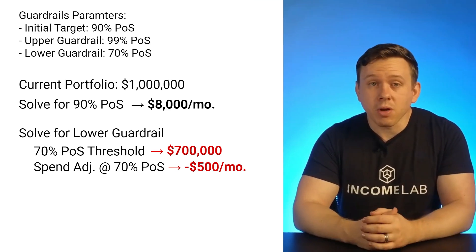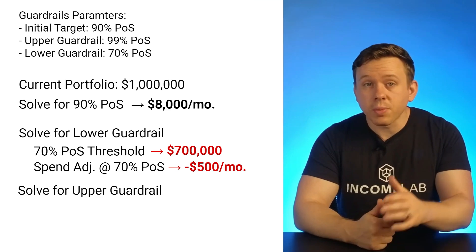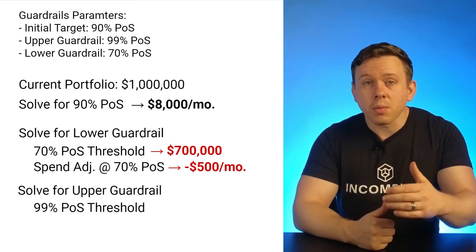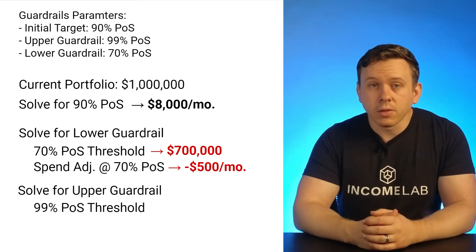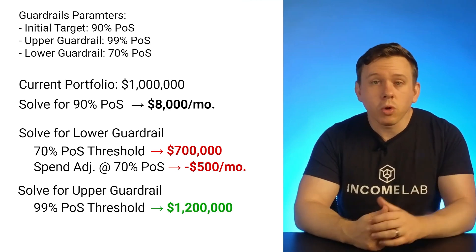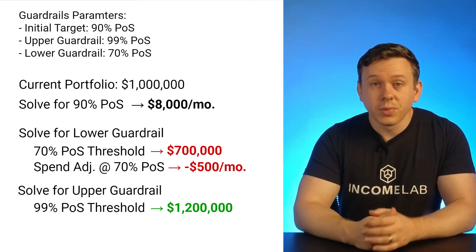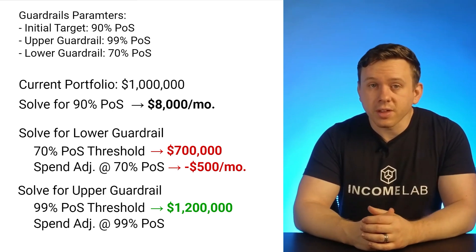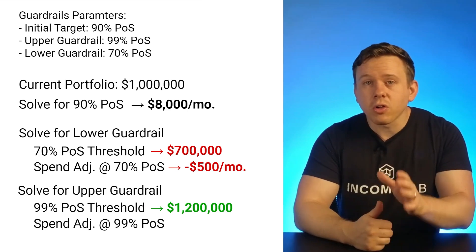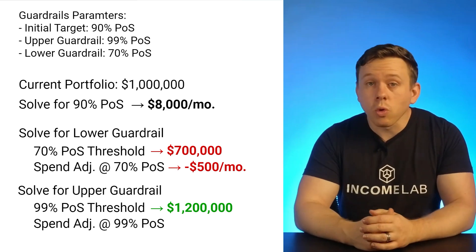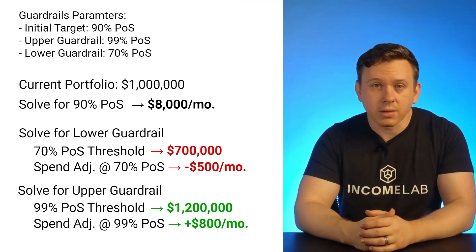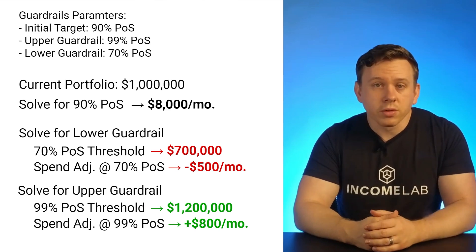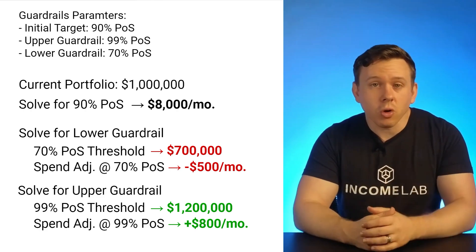So now we're ready to repeat that same process for the upper guardrail. We reset our spending to $8,000 per month after taxes and then start guess and checking with portfolio balances that raise the probability of success up to 99%. Let's assume we arrive at a value of $1.2 million for our upper guardrail. Now, we'll keep this portfolio value at $1.2 million and start adjusting our spending up until we're back at a 90% probability of success. We guess and check until we arrive at $8,800 per month, which corresponds to an $800 per month increase in spending. And there we go — we've completed all of our calculations to define both our upper and lower guardrails using a traditional Monte Carlo tool to build a risk-based guardrails plan.